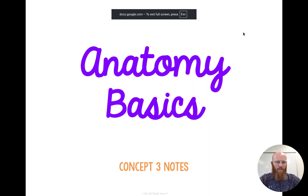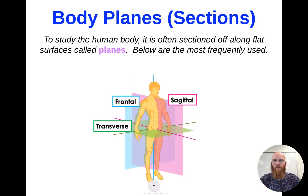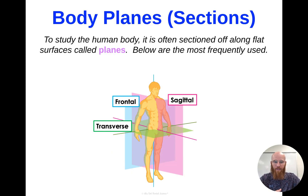Hello, everyone. This is Mr. Jackson, and today we're going to be moving forward in our concept three discussion of the basics of anatomy. We're going to be covering our body planes or sections and our body cavities. In order to study the human body, we would normally section off along these flat surfaces portions of the body, and they give us certain viewpoints of our internal structures — we call these planes. We're going to look at the three most commonly used ones.